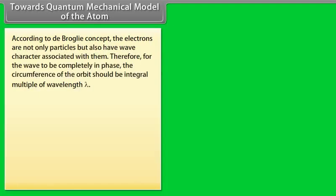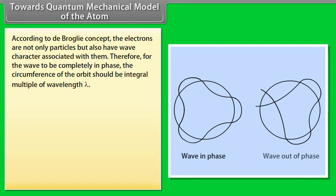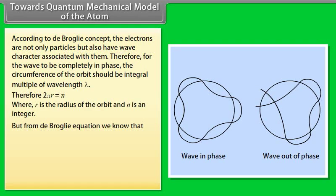According to the de Broglie concept, electrons are not only particles but also have wave character associated with them. Therefore, for the wave to be completely in phase, the circumference of the orbit should be an integral multiple of wavelength lambda. From the de Broglie equation, lambda equals H upon MV. Hence, 2πR equals N times H divided by MV, where MVR equals N times H divided by 2π.